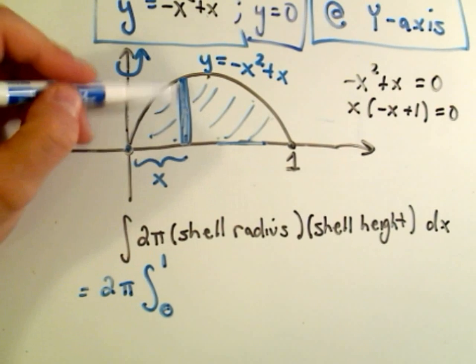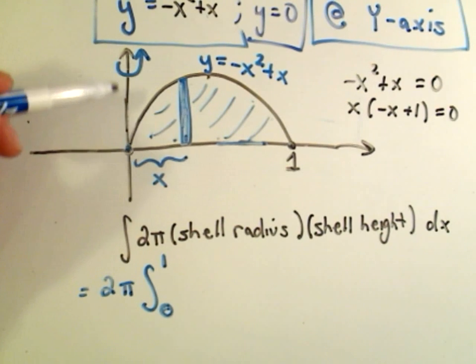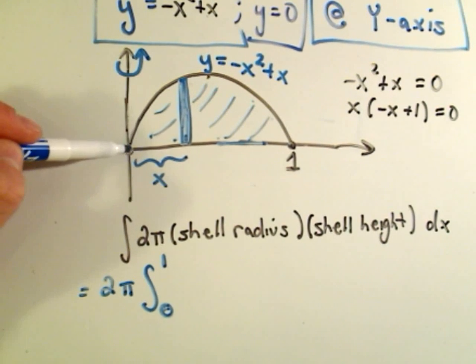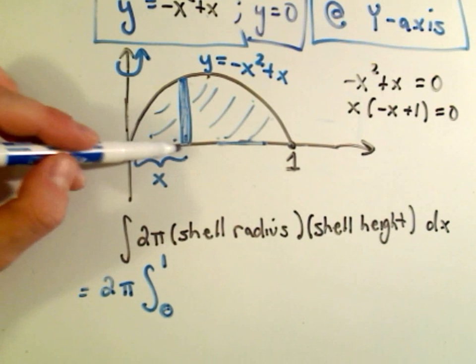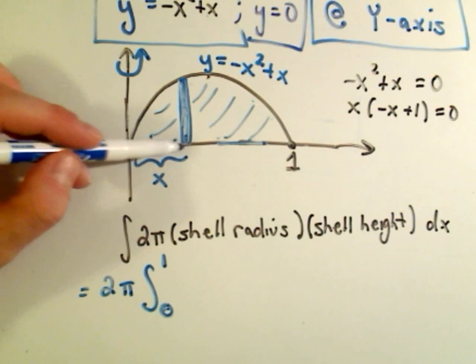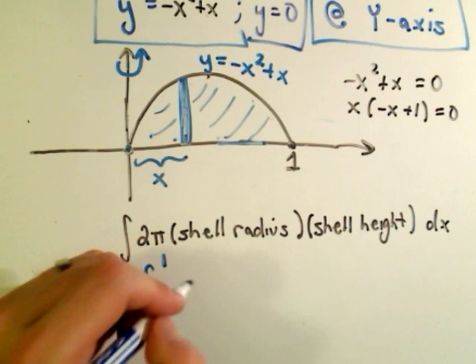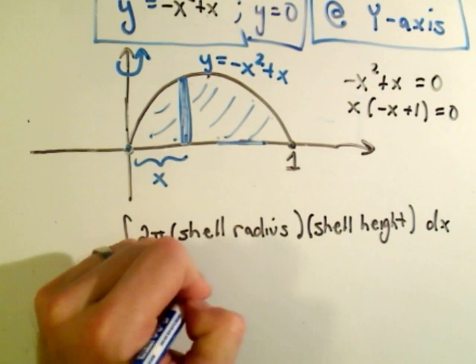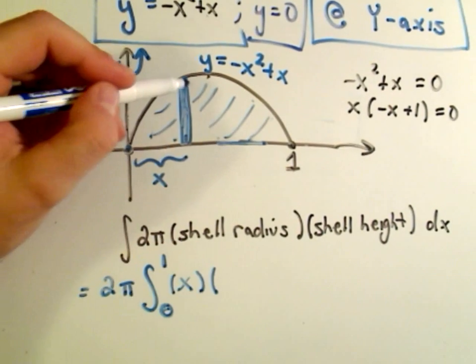The shell radius is just the distance from my shell to the line I'm going about. So if I'm rotating about the y-axis, the shell radius in this case would simply be x.